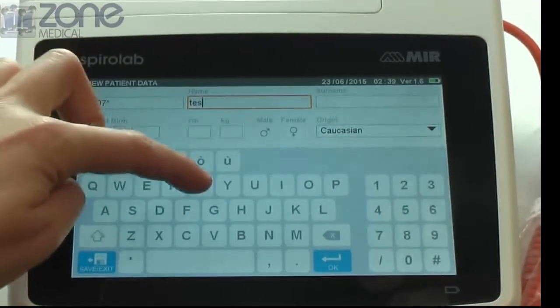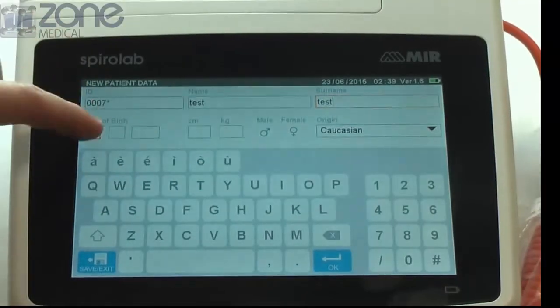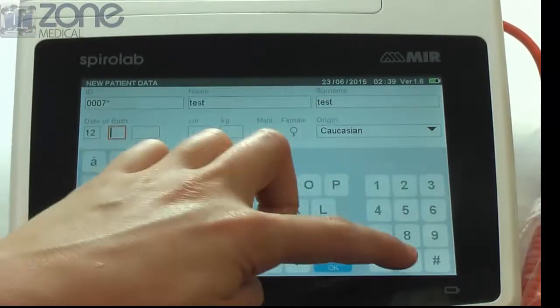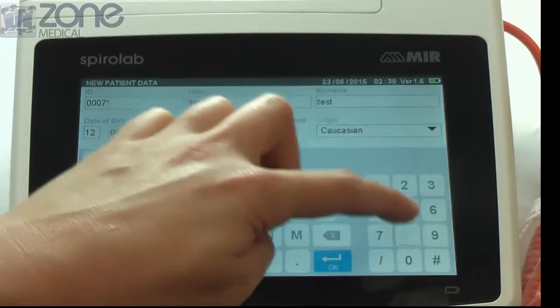From here you may add any preferred ID, name and last name, date of birth, height and weight, gender and ethnicity. These results are vital for an accurate test.